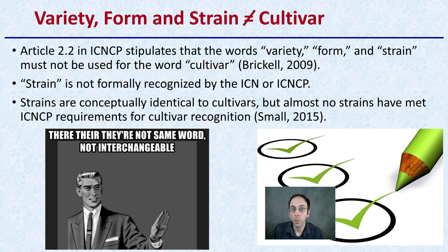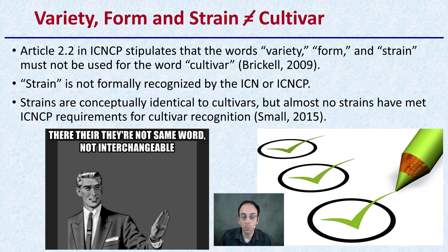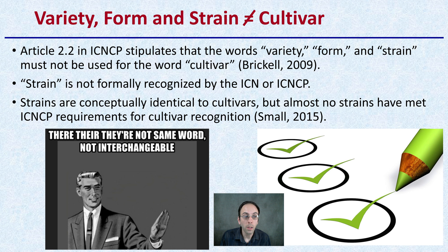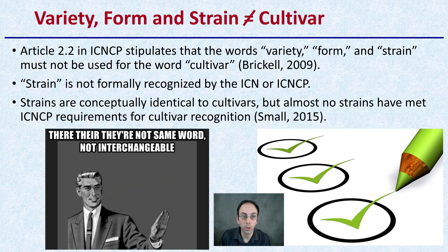Variety, form, and strain do not equal the same as the word cultivar. Article 2.2 stipulates that the words variety, form, and strain must not be used for the word cultivar — cultivar is its own distinctive entity. Strain is not uniformly recognized. Strains are conceptually identical to cultivars in concept, but almost no strains have met the official ICNCP requirements for cultivar recognition. All these sources are located in the description of this video.